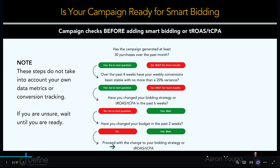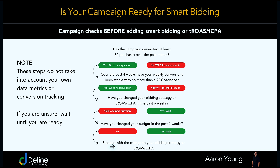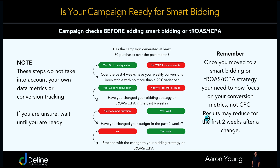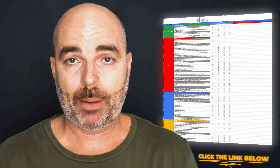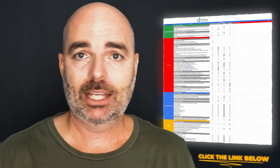If you've answered yes to the first two questions and no to the last two, you can proceed with the change to your bidding strategy or adding in that target ROAS or target CPA. One more thing to remember: once you've moved to a smart bidding strategy, focus on conversion metrics, not CPC. It's highly likely your CPC will go up. What matters is: are you getting more conversions at a lower cost, or more revenue at a lower cost? That's what you really want to focus on. Those are the questions I ask myself before making any changes to my smart bidding strategies.